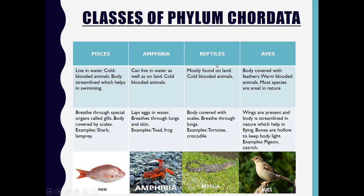Coming to the third class of Phylum Chordata, Reptilia: mostly found on land, cold-blooded animals. Their body is covered with scales and they breathe through lungs. Examples include tortoise and crocodile.